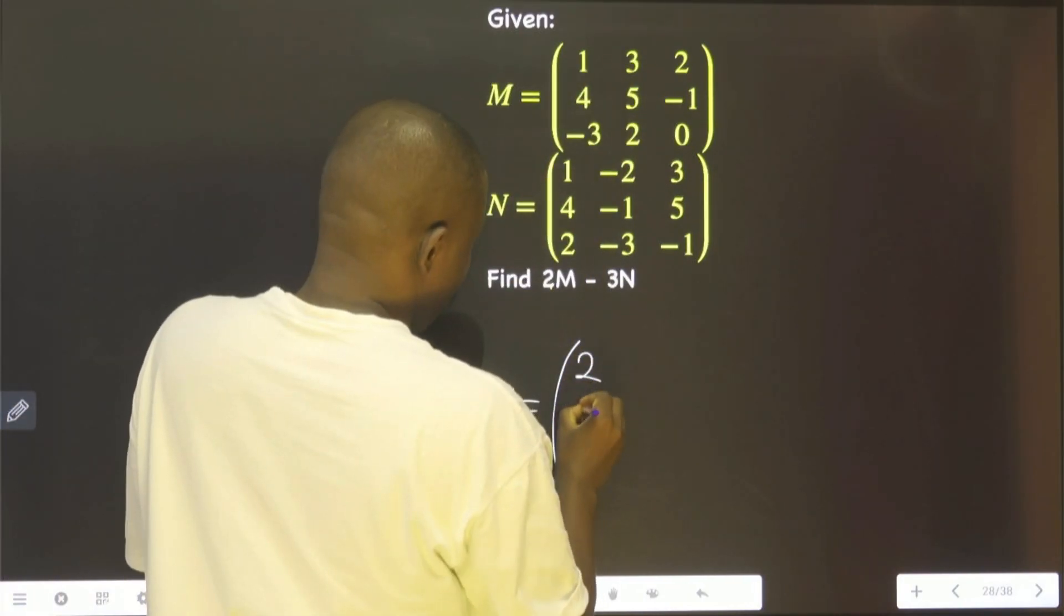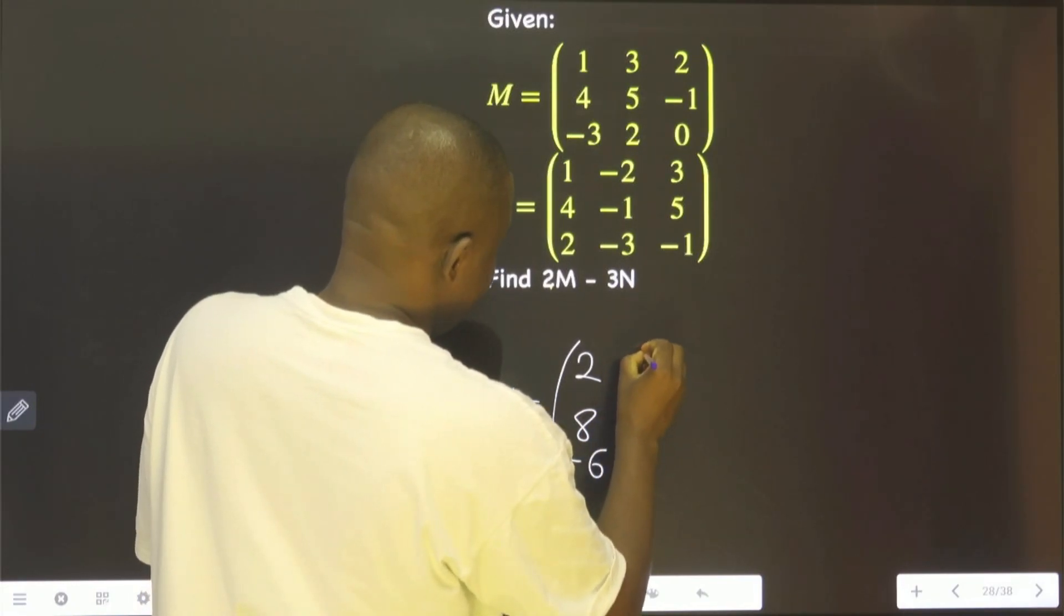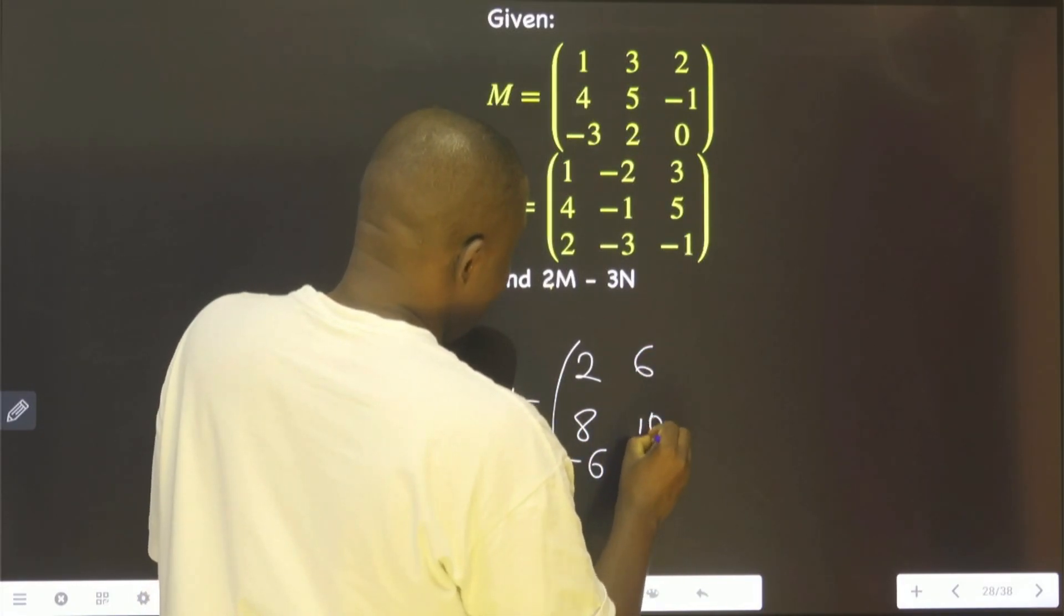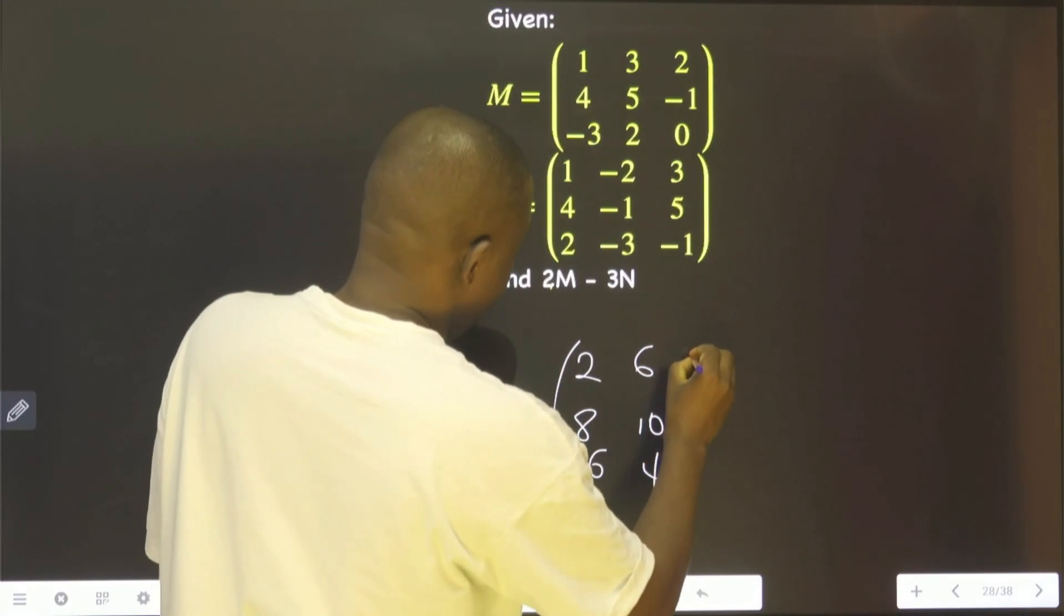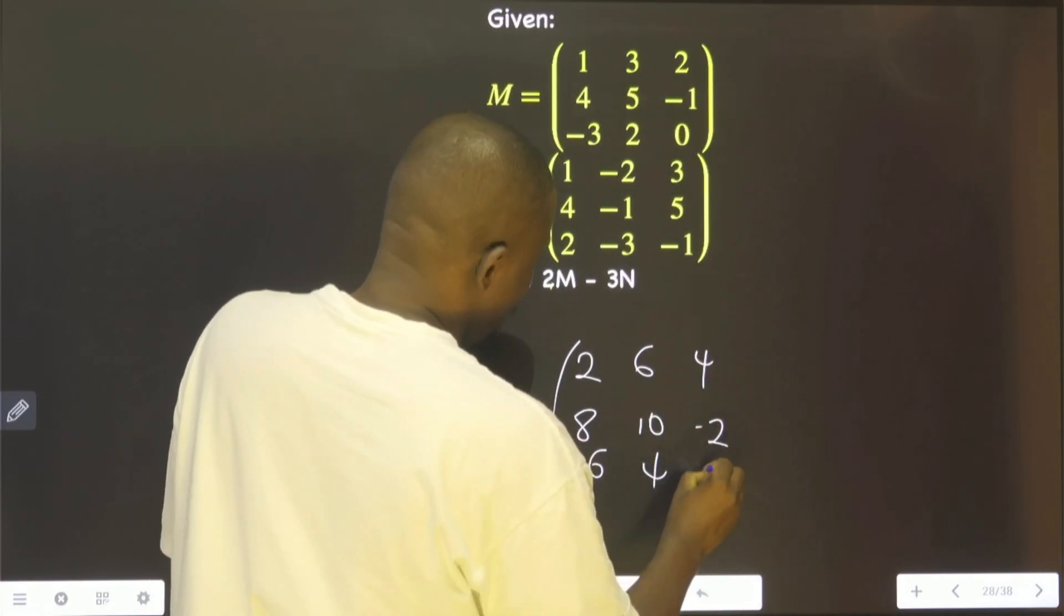That is 2, 8, minus 6, 6, 10, 4, 4, minus 2, 0.